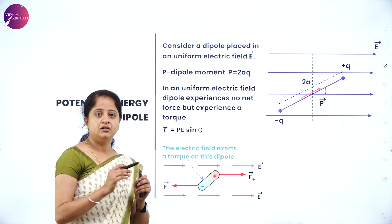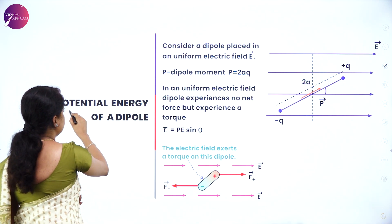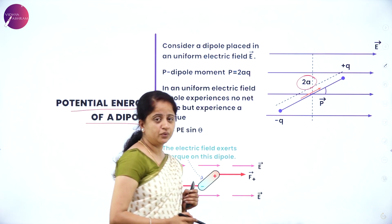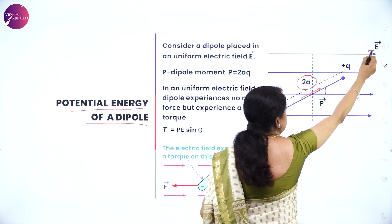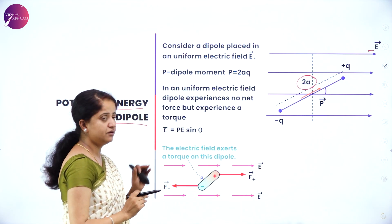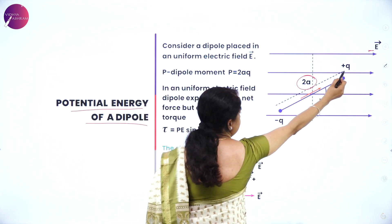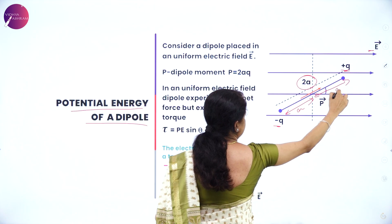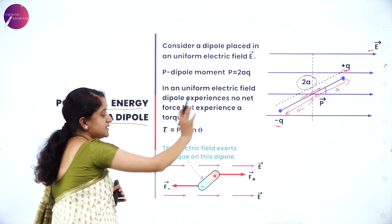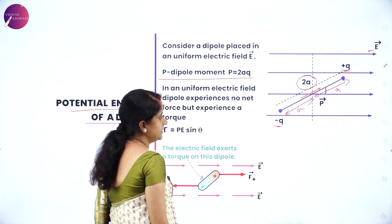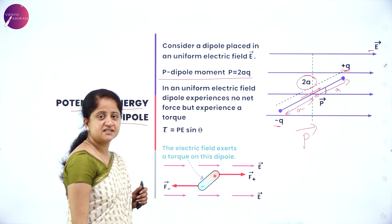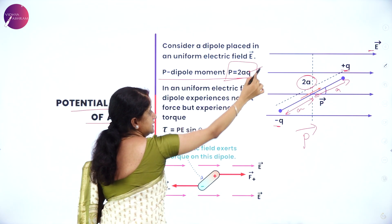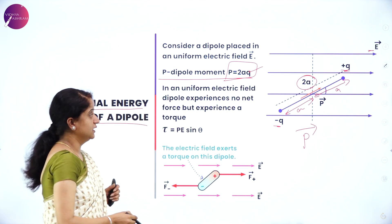Now let us study the expression for potential energy of a dipole. A dipole is two charges separated by a distance 2a. This dipole is placed in an external electric field, and P is the dipole moment — the product of either charge and the distance of separation, with direction always from negative to positive charge. So P = 2aQ, where Q is either charge and 2a is the distance of separation.